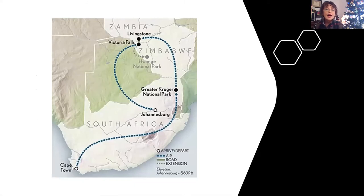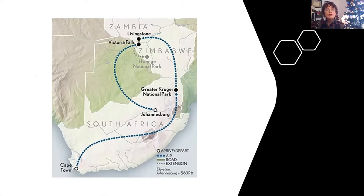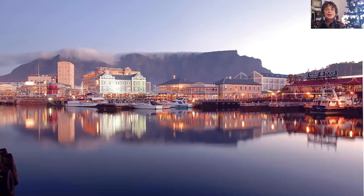Here is a typical itinerary I like to offer. As you can see with the blue dots, there's a lot of air travel between the places, so you're not going to have an awful lot of driving unless you're in the game reserve. We've incorporated Victoria Falls in this one as well. You get to see the Greater Kruger National Park and Cape Town — these are the highlights you want to see when you go to South Africa.